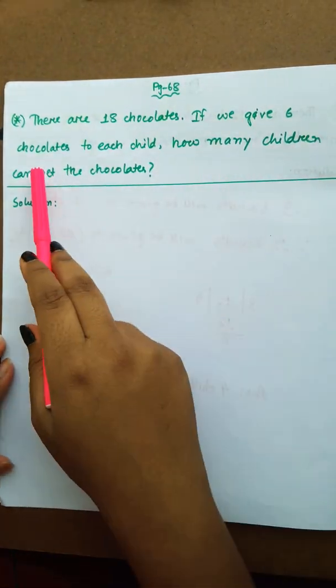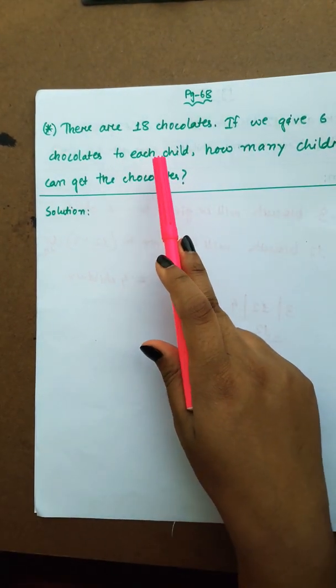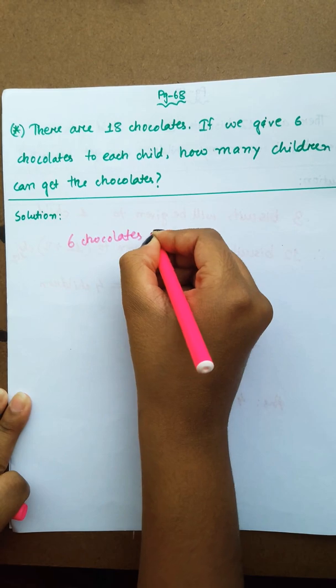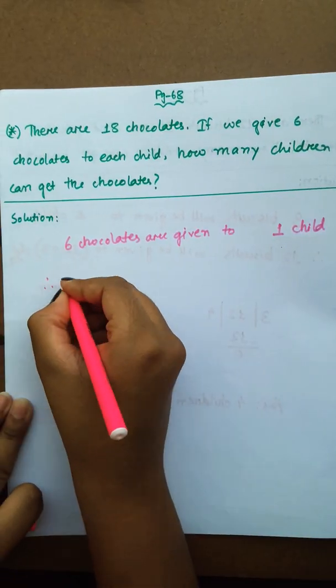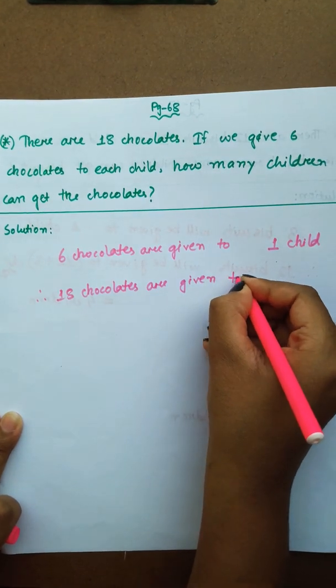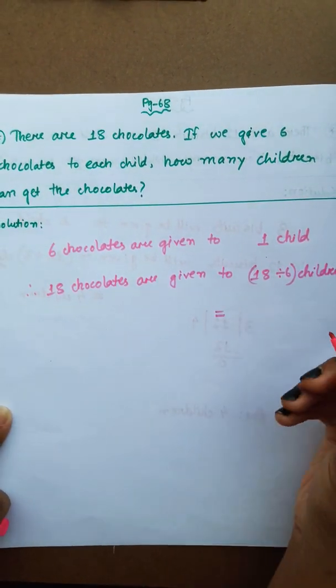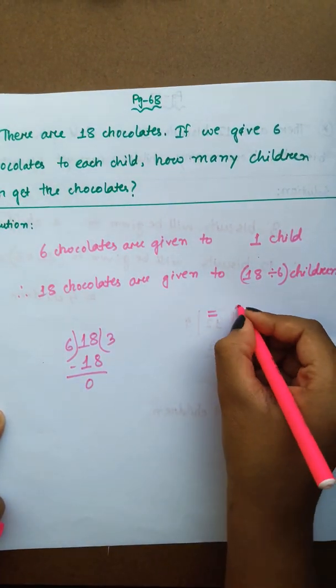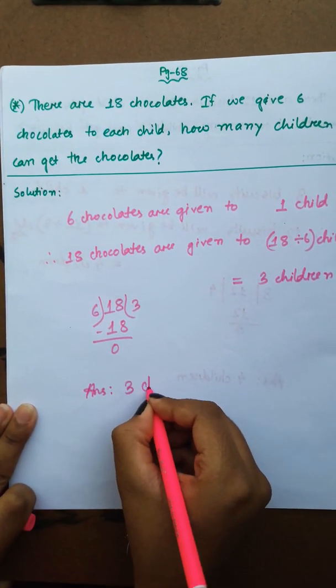There are eighteen chocolates. If we give six chocolates to each child, how many children can get the chocolates? Six chocolates are given to one child. Therefore, eighteen chocolates are given to eighteen divided by six children. We know six threes are eighteen. So three children. Answer is 3 children.